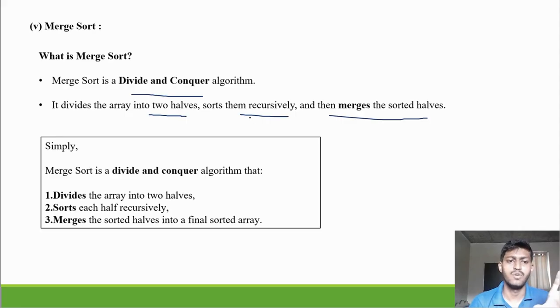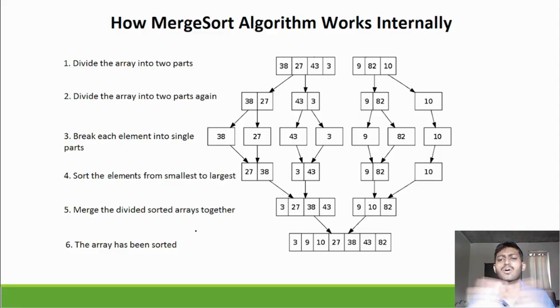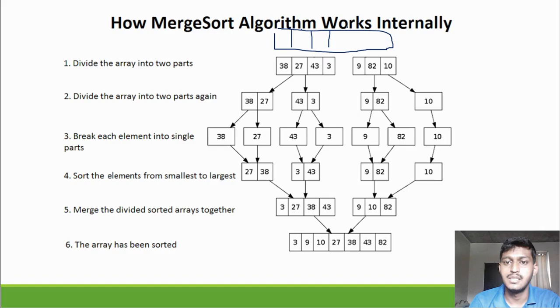You can see this array. This is the entire array: 38, 27, 43, 3, 9, 82, and 10. This is the unsorted array. Then I have divided the array. You can divide it however you want - यहाँ पर 4 यहाँ पर 3, अगर 8 होते तो यहाँ पर 4 यहाँ पर 4 करनेका. कोई problem नहीं, आप कैसे भी divide करो.